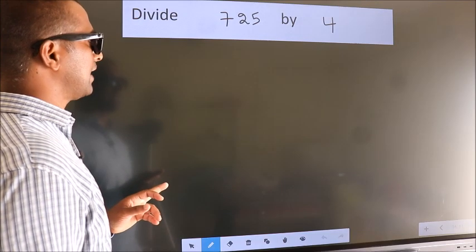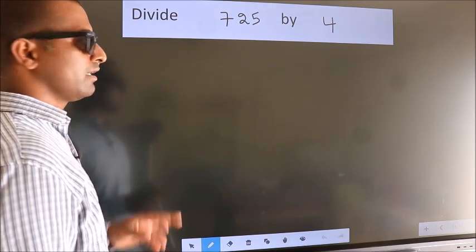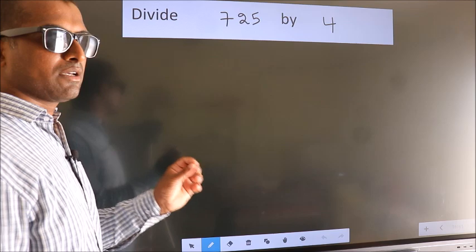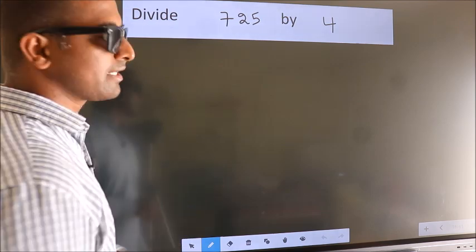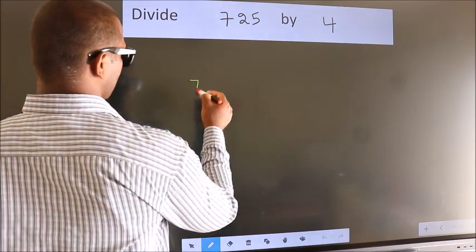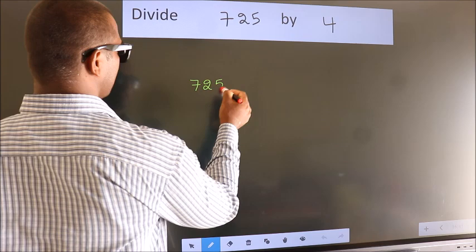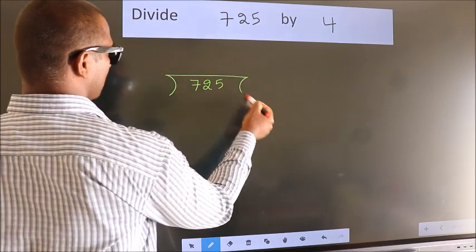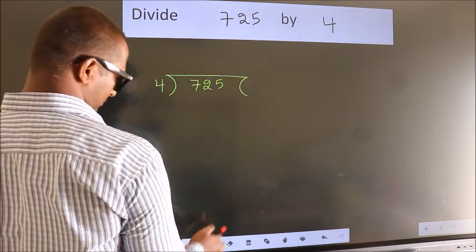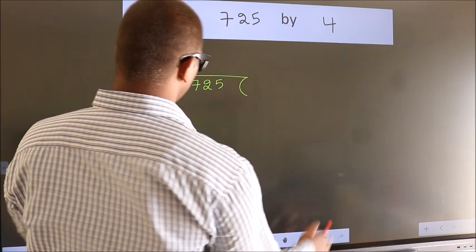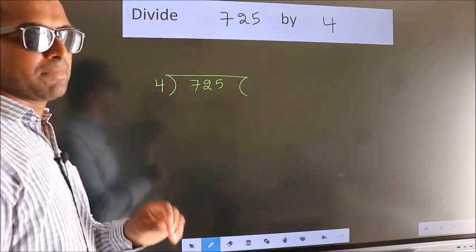Divide 725 by 4. To do this division, we should frame it in this way: 725 here, 4 here. This is your step 1.